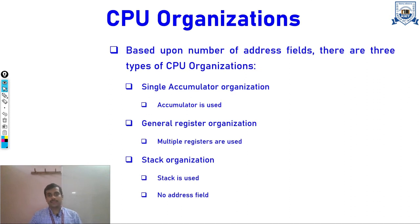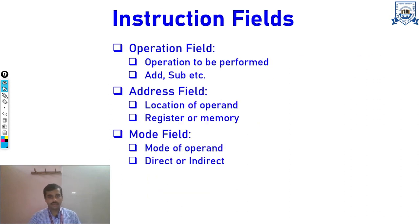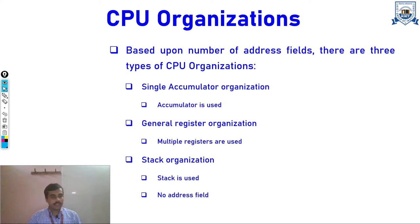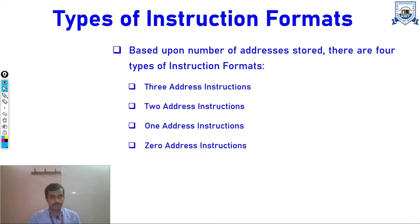Based on the address field, there are three types of CPU organizations. First is single accumulator organization, in which an accumulator register is used for data manipulation and storage. Second is general register organization, in which multiple registers are used for storing data and addresses. Third is stack organization, where a stack is used but there is no address field.